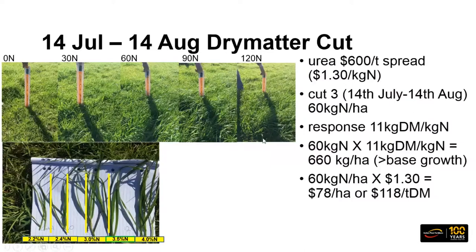If we take the example of applying 60 kilograms of nitrogen getting 11 kilograms of dry matter for every kilogram of N, we can crunch the numbers to see what that cost of feed is compared to buying alternative hay, silage, or grain. Using urea at $600 a tonne spread — $1.30 a kilogram of N — and applying 60 kilos of N with a response of 11 kg dry matter per kg N, we grew an extra 660 kilograms of dry matter. That works out at about $78 a hectare or $118 a tonne of dry matter — letting you quickly calculate whether the economics stack up.